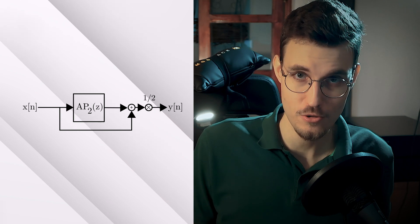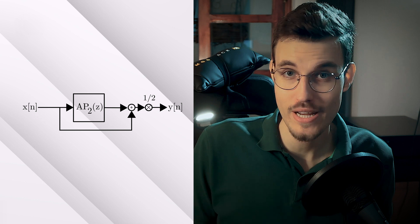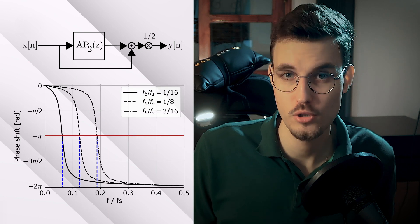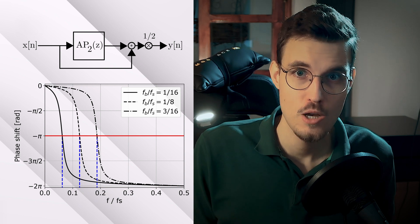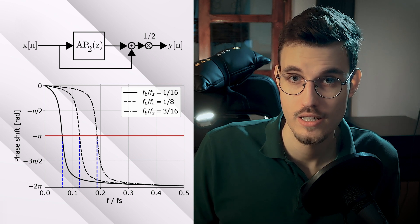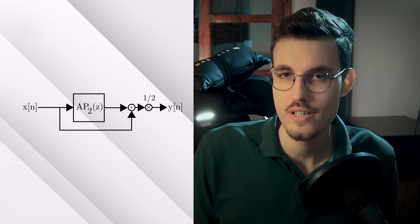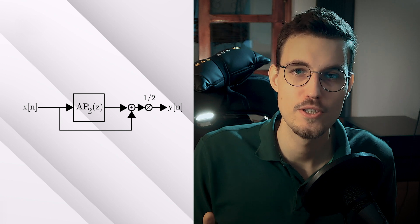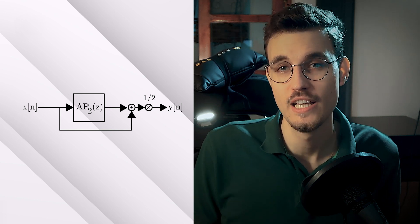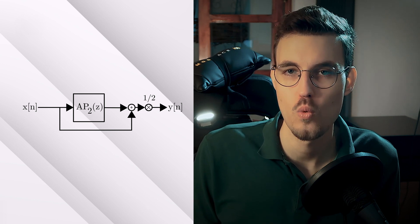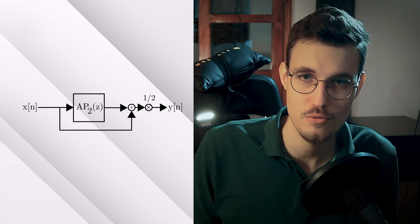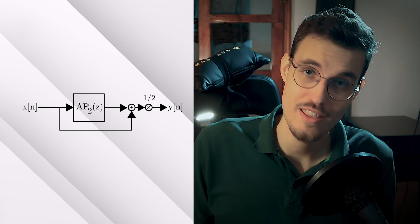If we add the output of the second-order allpass filter to its input signal, at the break frequency we will obtain a phase cancellation. At the break frequency the phase delay is minus pi, so adding two tones at the break frequency with a relative phase shift of pi effectively eliminates them from the resulting signal. As the phase shift deviates from pi further away from the break frequency, the cancellation is less and less effective. So this diagram is indeed a band stop filter. AP2(z) denotes the second-order allpass filter, and its output is added to the direct path. We multiply the result by half to stay in the minus 1 to 1 range, since the input and allpass output are each in the minus 1 to 1 range, their sum is in the minus 2 to 2 range, and we scale back down to avoid clipping.